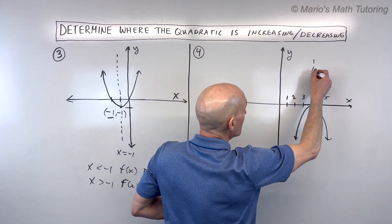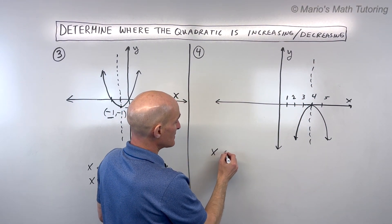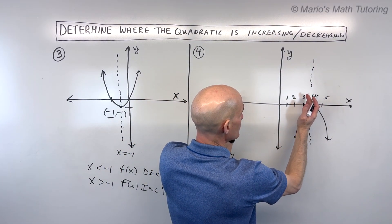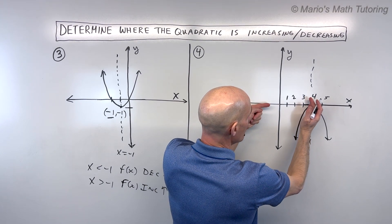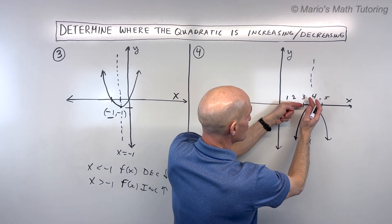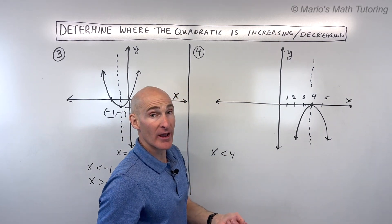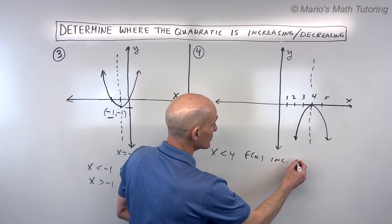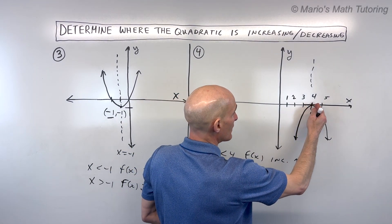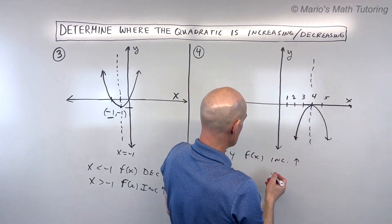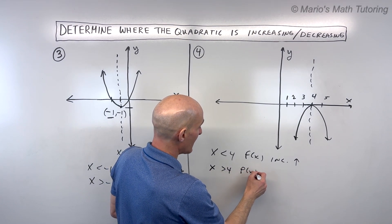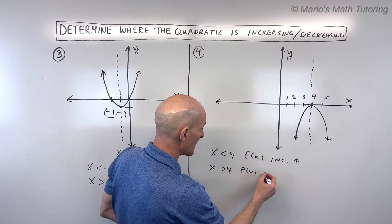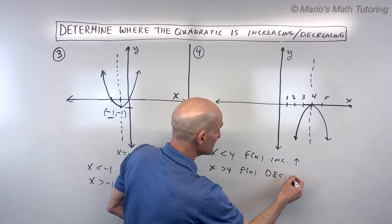When x is less than 4 — so when we're to the left of this axis of symmetry — as we're moving from left to right in the x direction, what happens to the y-values? They're going up. So f of x, or the y-values, are increasing. Now when x is greater than 4, moving from left to right, the y-values are going down and f of x is decreasing.